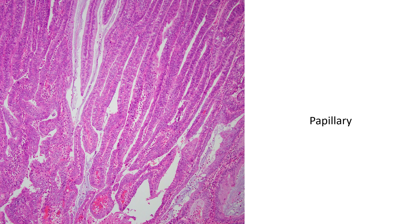Here we have an area of papillary growth. In some cases you get these really long villiform or finger-like papillae lined by glandular cells, and this counts as architectural complexity that can push you to carcinoma.